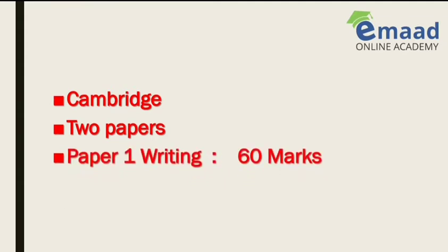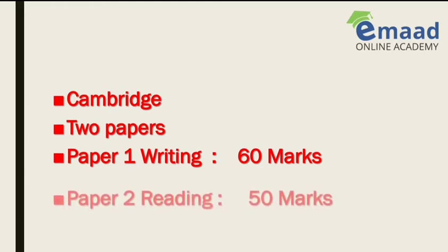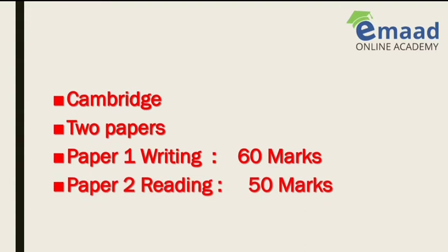There are two papers in your O Levels Cambridge English. Paper 1 is Writing, which has 60 marks in total. Paper 2 is Reading, which has 50 marks in total. Both papers carry 50% weightage of total marks. You have to attempt both of these papers for your O Levels English.